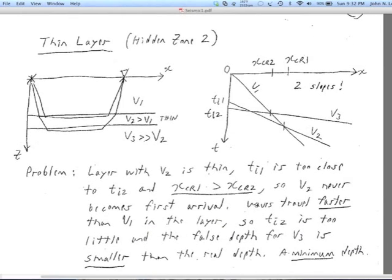Hidden zone type 2, the thin layer. Basically, we have the situation we want, where V1 is less than V2, and they're both less than V3. But the problem is that V3 is too high, and V2 is not high enough relative to V1, or it's also typically very thin. So what happens is you get the V1 line here in the record section. And the V2 line, yeah, it's steeper and we should see it. But the V3 line is so fast that it comes out and makes its crossover with the V1 line before the V2 line ever has a chance to get there. So we still just see two slopes. Big problem.